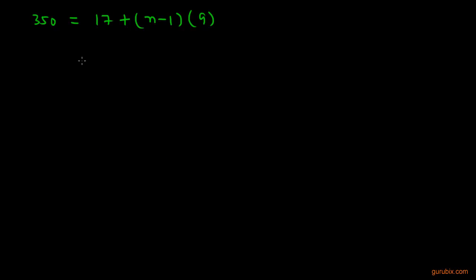Now we shall solve this equation for n. This is 17. When we multiply n-1 by 9, we get 9n - 9, and here is 350. When we subtract 9 from 17, we get 8, and this means 9n = 350 - 8, which means 342.